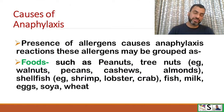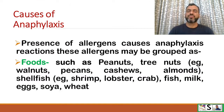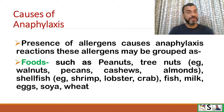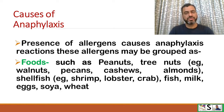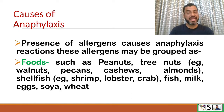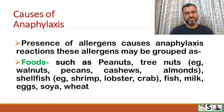What are the causes of anaphylactic reactions? The presence of allergens causes anaphylaxis. These allergens may be grouped as food, such as peanuts, tree nuts, walnuts, pecans, cashews, almonds, shellfish like shrimp, lobster, crab, fish, milk, egg, soy, and wheat — anything may lead to an allergic reaction.